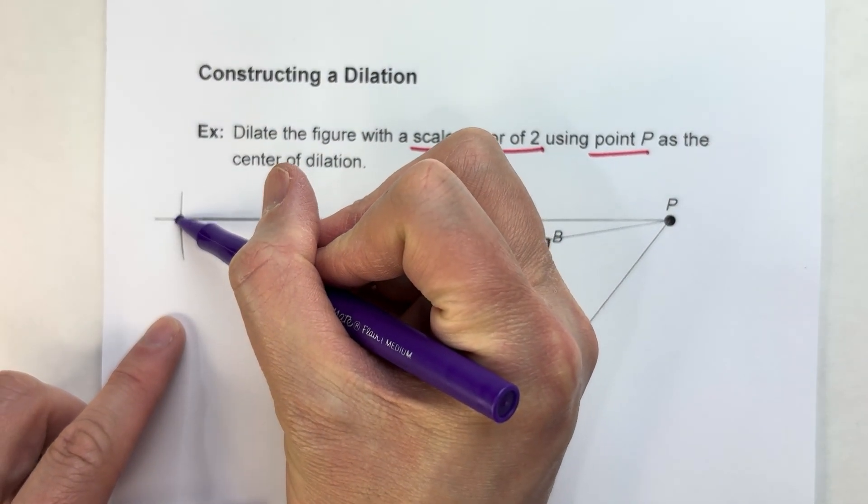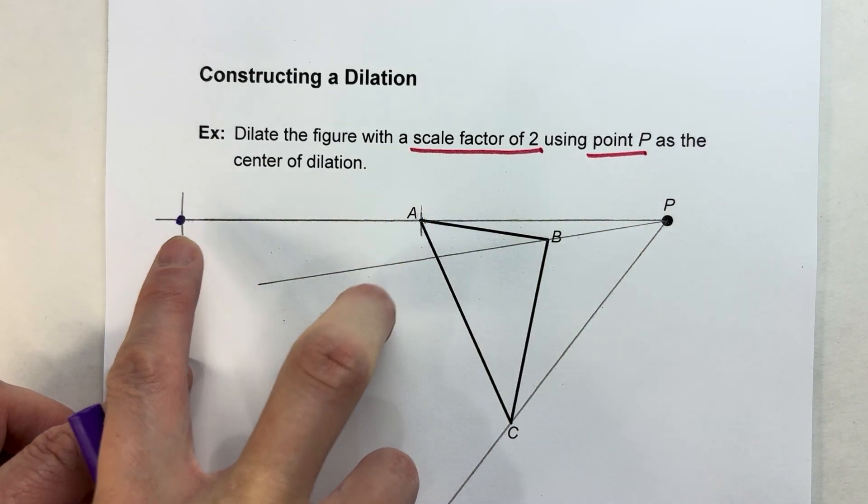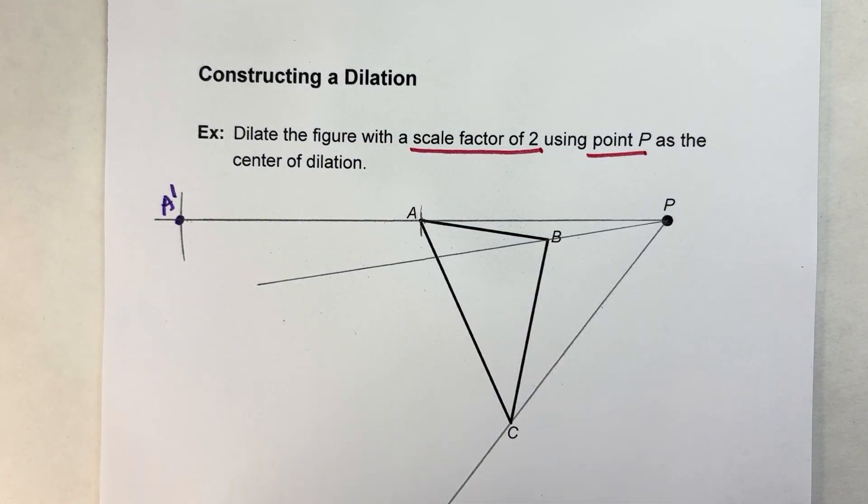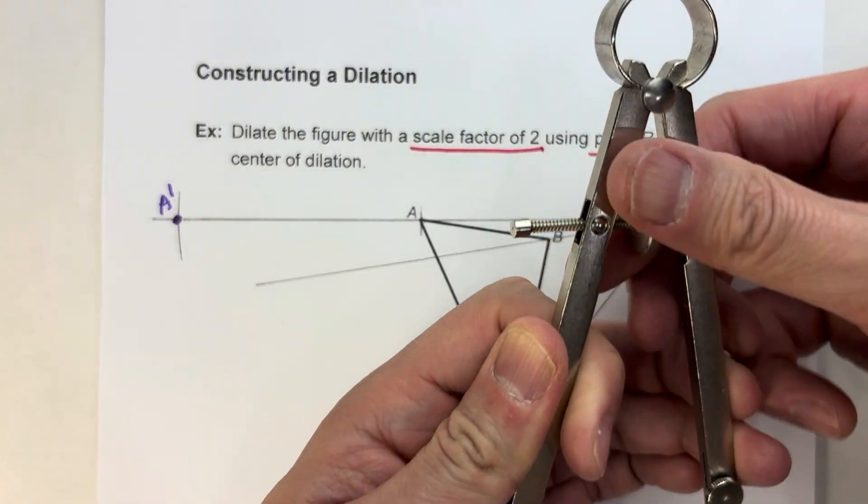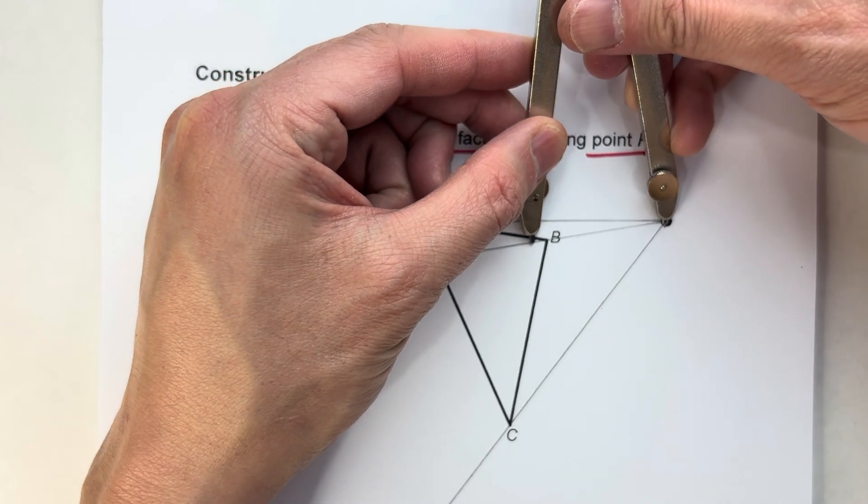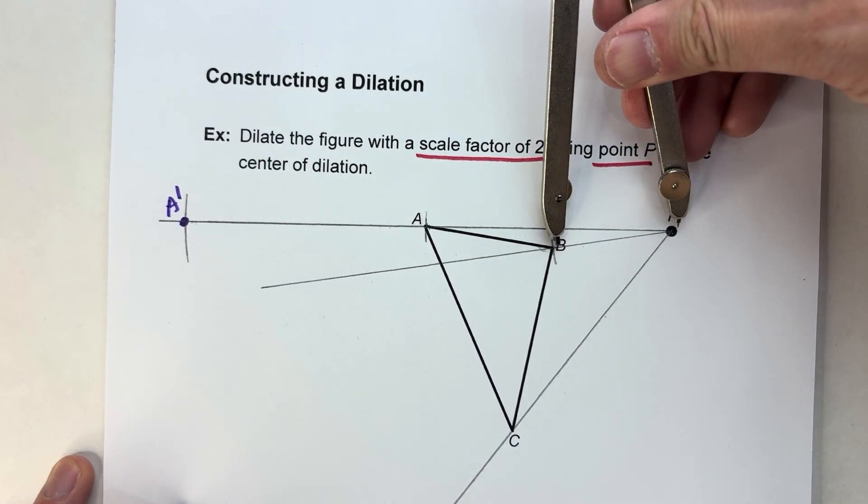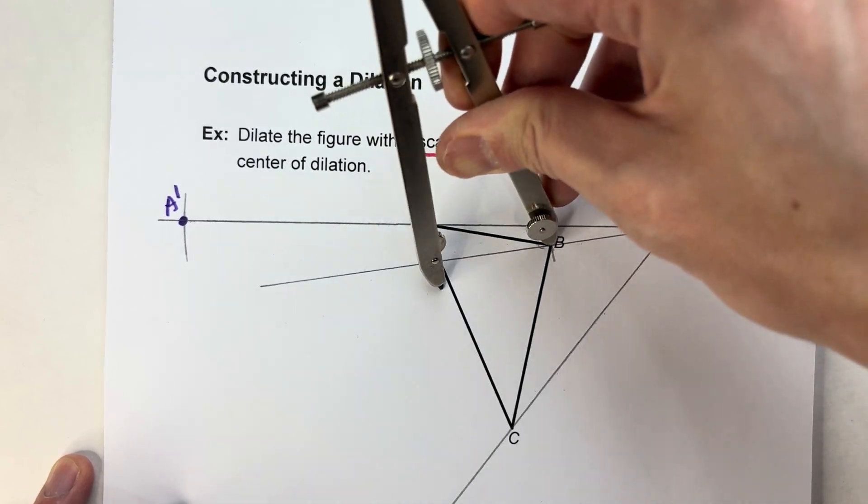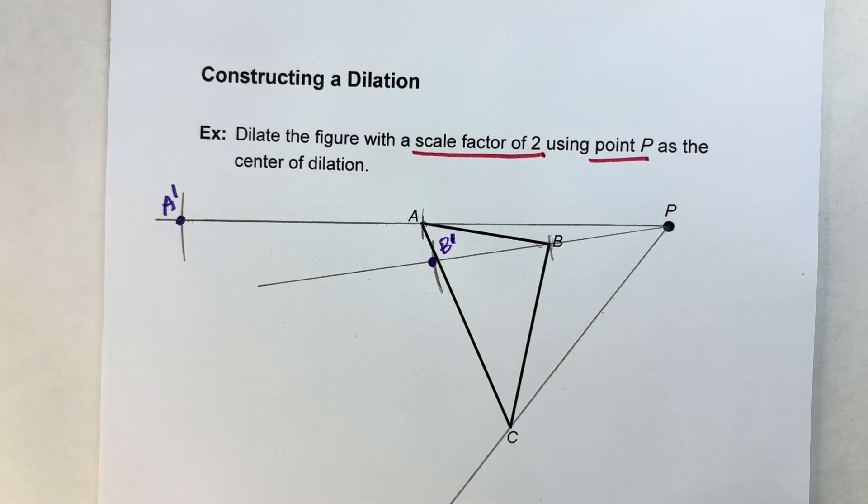So A is going to end up way over here. This is the path A is following, and we know that distance using my compass is where it's going to end up. That's going to be my A prime. And we'll do the same thing with B and C as well. So for B, I'm going to again take that distance from P to B. There it is right here. And then my scale factor is two, so I'm going to double it. One, two. There's where B prime is going to end up right there.